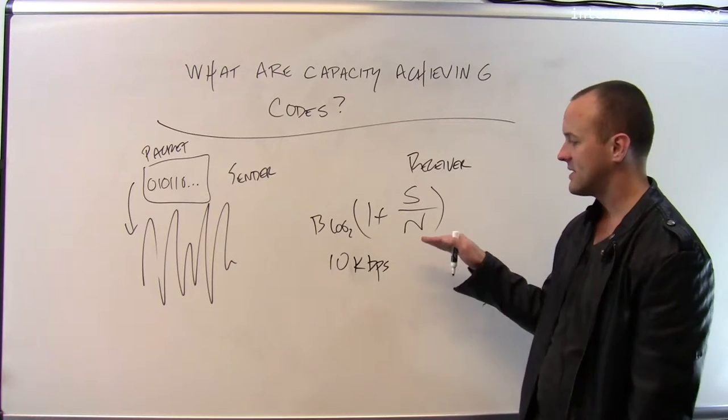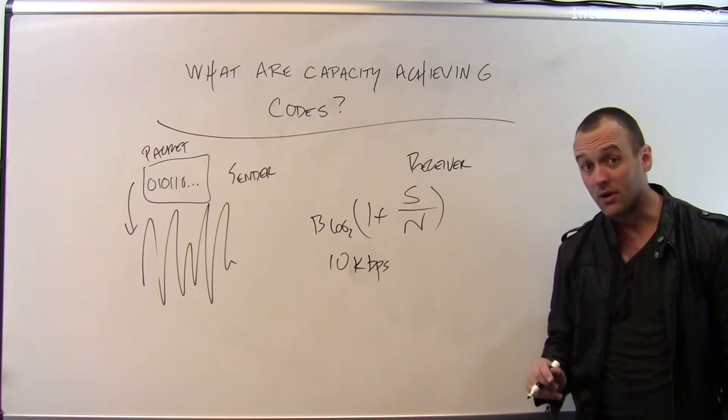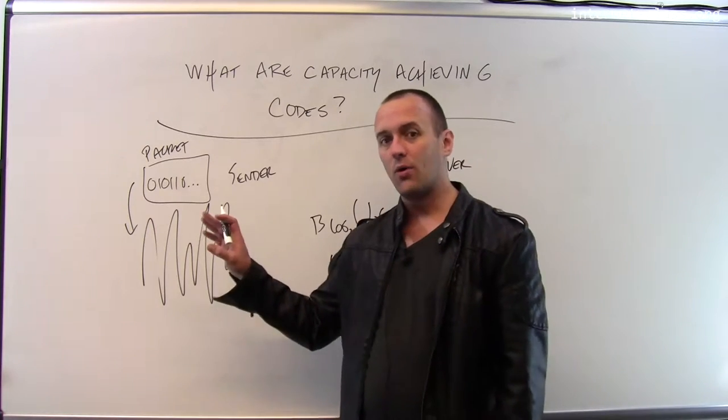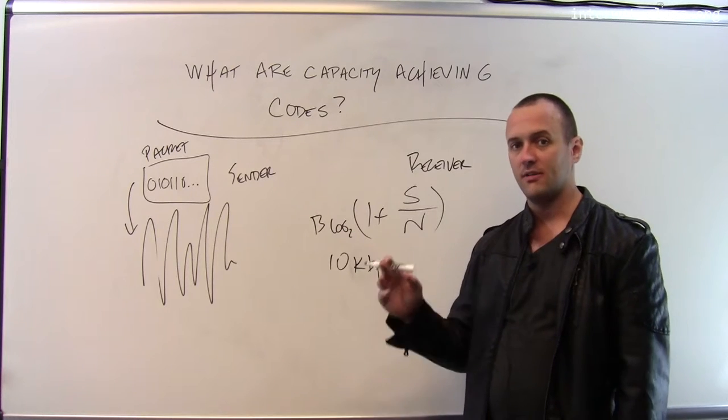The Shannon limit tells me that there is absolutely no way that I can transmit any faster than this. However, I can transmit slower than this of course, and depending on how good my encoding is, I'm going to achieve some fraction of the Shannon limit.